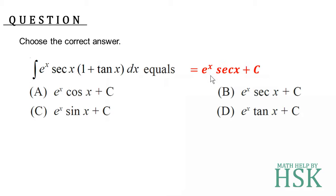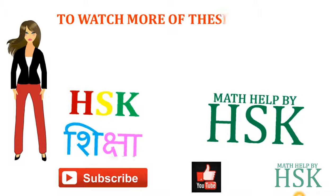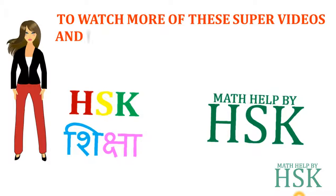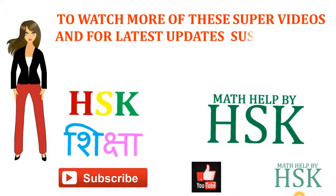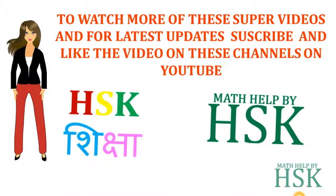Because this integral is equal to e to the power of x into sec x plus C, the correct option is option B: e to the power of x into sec x plus C.